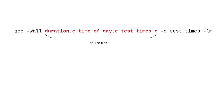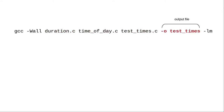Follow this option with the names of your C files. The next option, -o, stands for output — it gives the name where the resulting compiled and linked program will be saved. By convention on Mac and Linux, you don't add .exe at the end of a program name. Finally, because this program uses math.h, you have to use this option to tell the linker to include the math library.